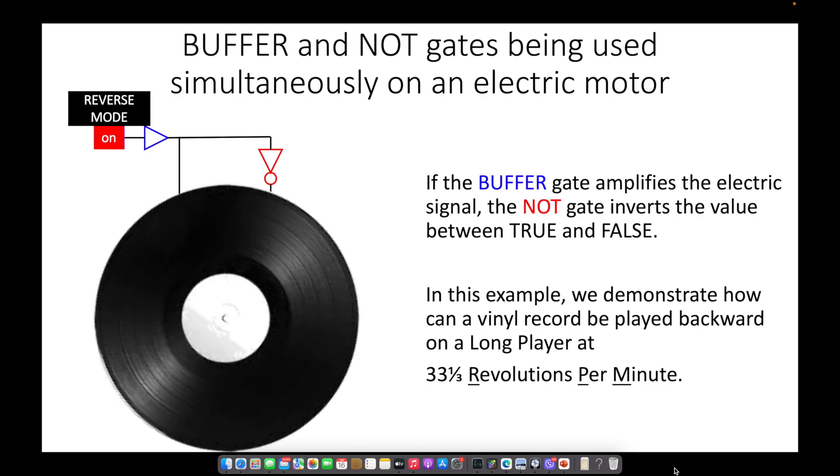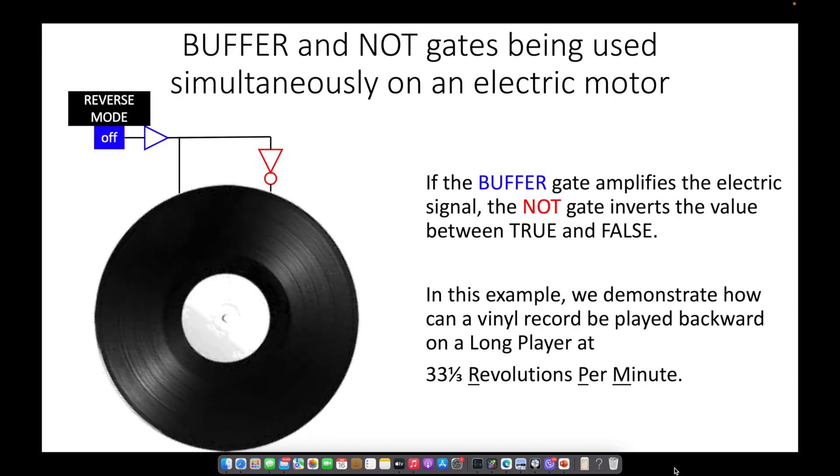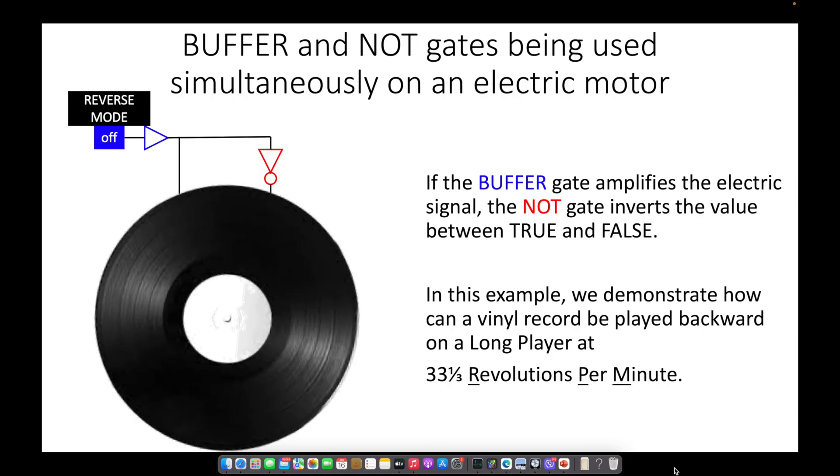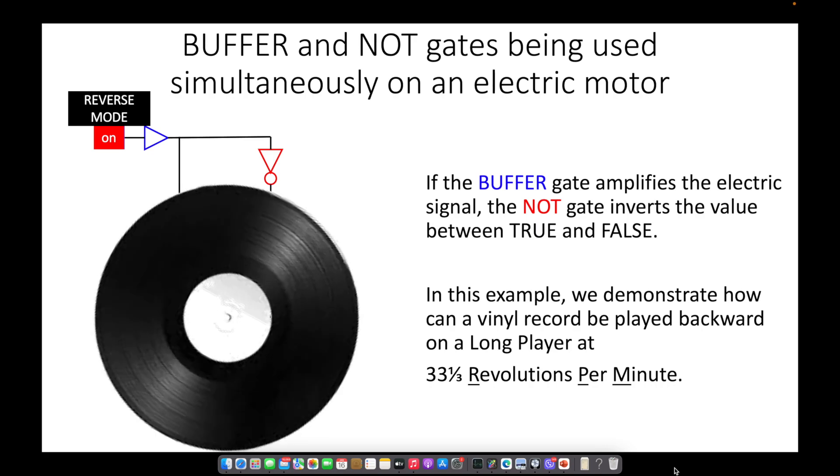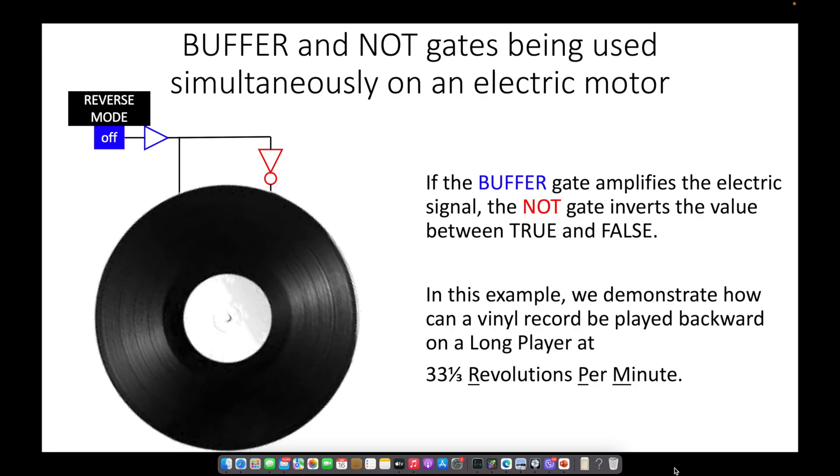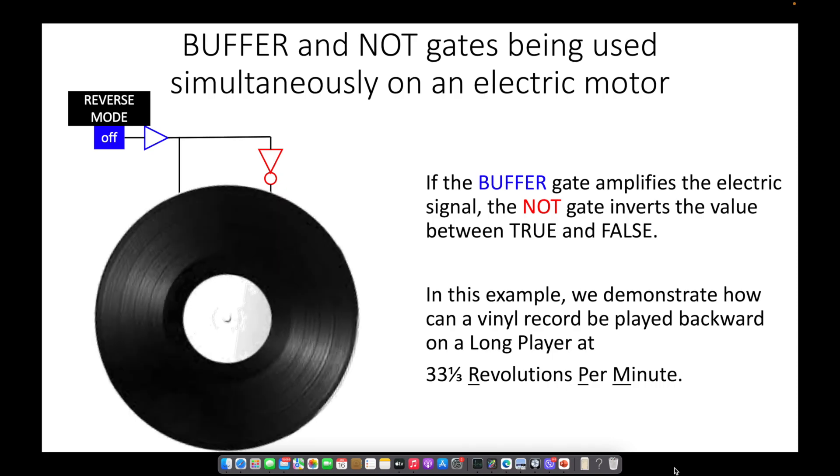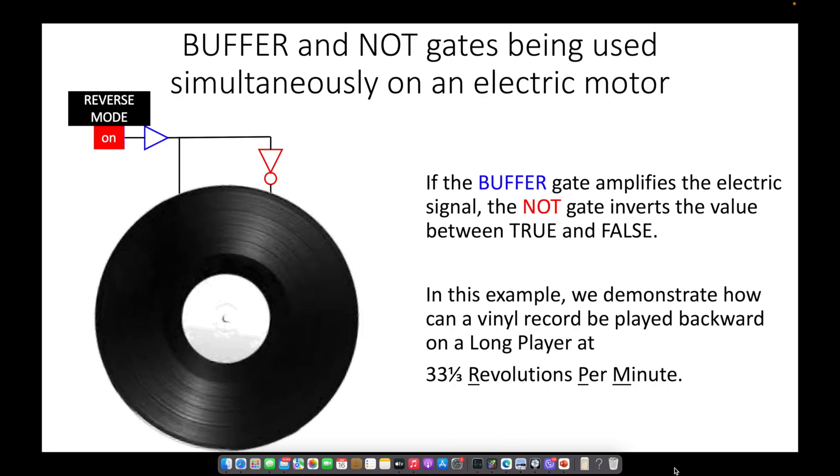During normal playback, the long player spins the vinyl record clockwise. But when you engage its reverse mode, it would spin counterclockwise. This is what disc jockeys are using to play a back mask version of the original recording.